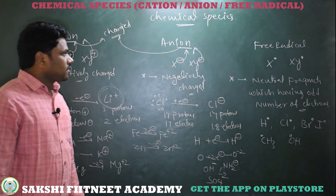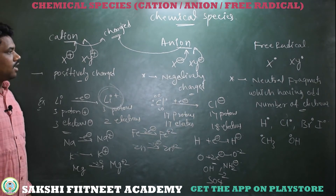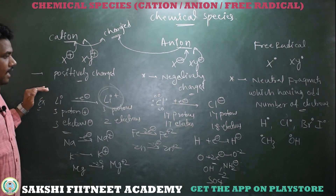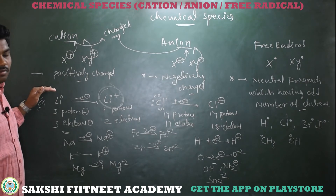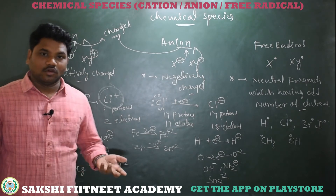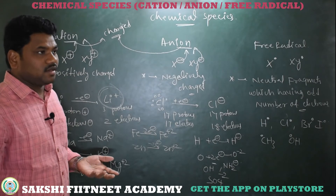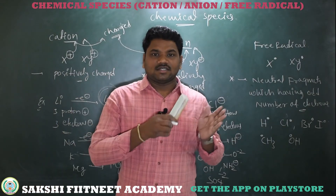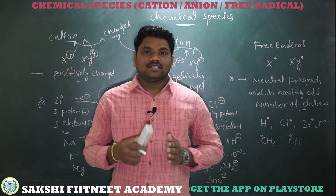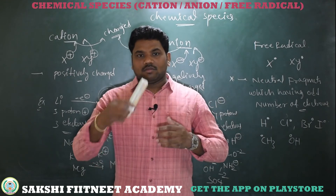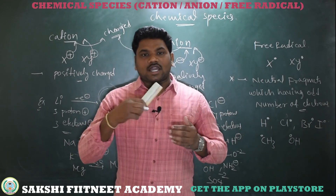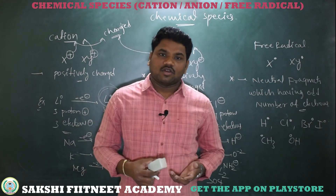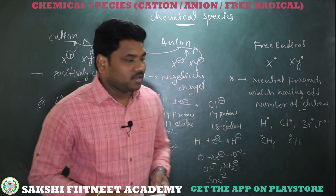This is a common classification of cation, anion, and free radical. In which reactions do we observe cation and anion fragments? Mostly in ionic compounds — for example, salts. Na⁺ and Cl⁻: sodium exists as a positive fragment and chlorine as a negative fragment. By their electrostatic forces they come close and exist as a crystal lattice — that is called common salt.